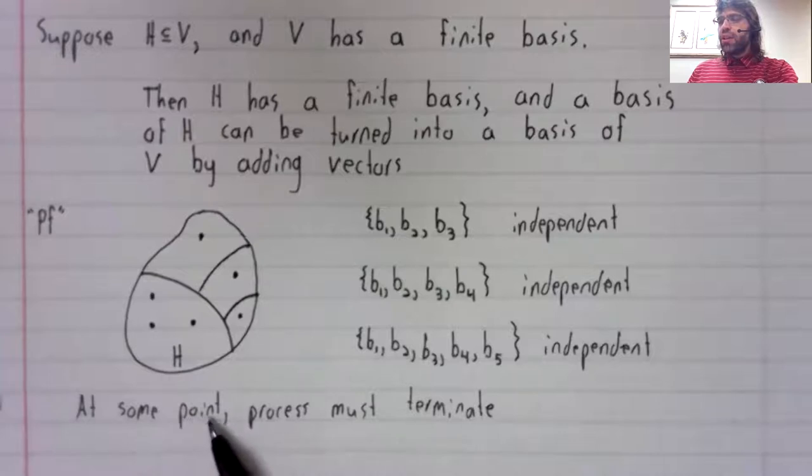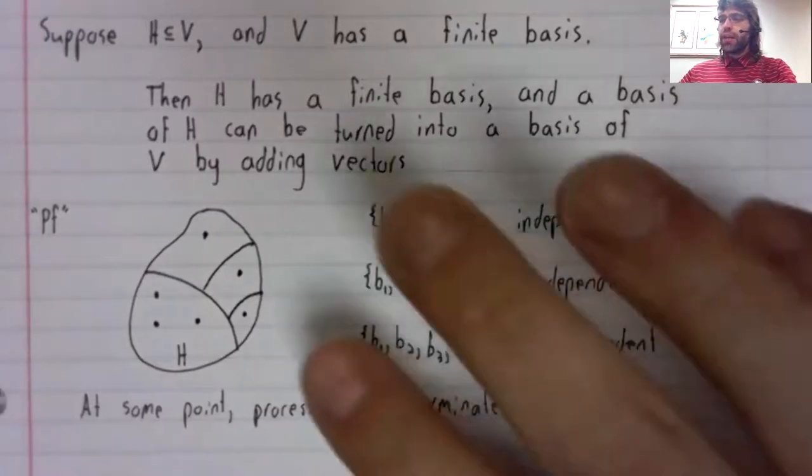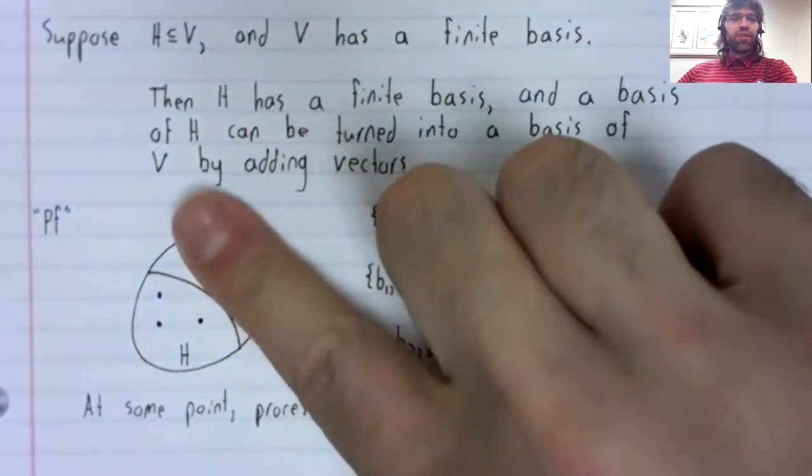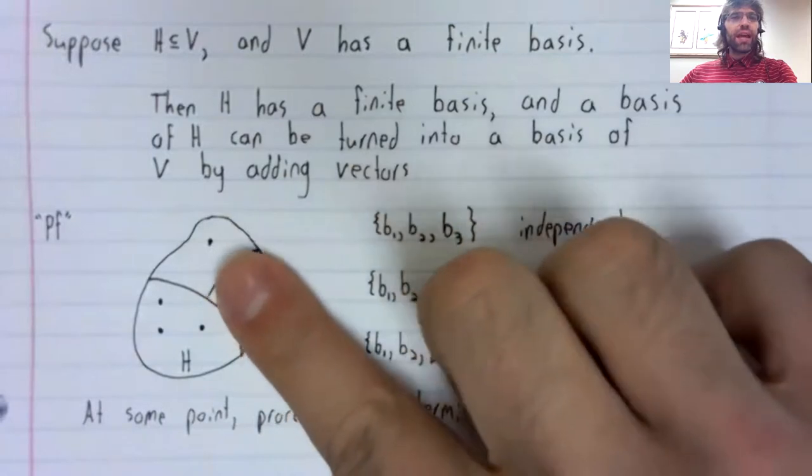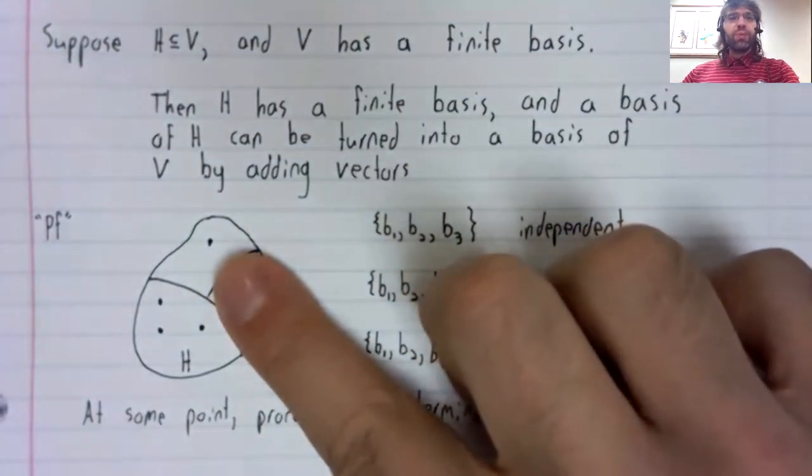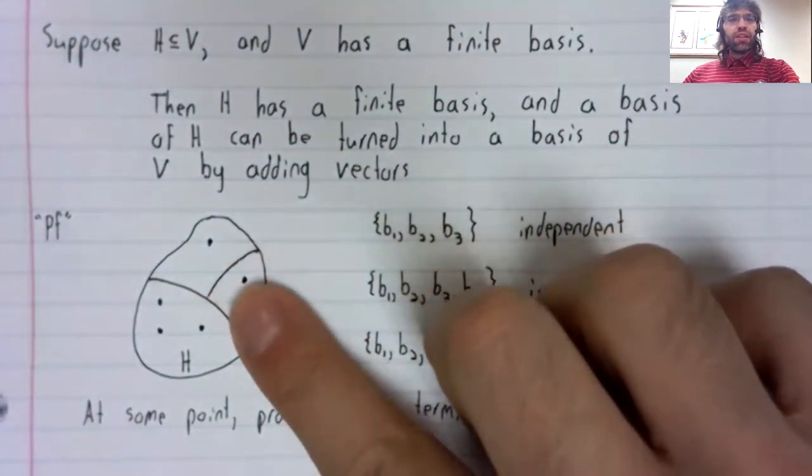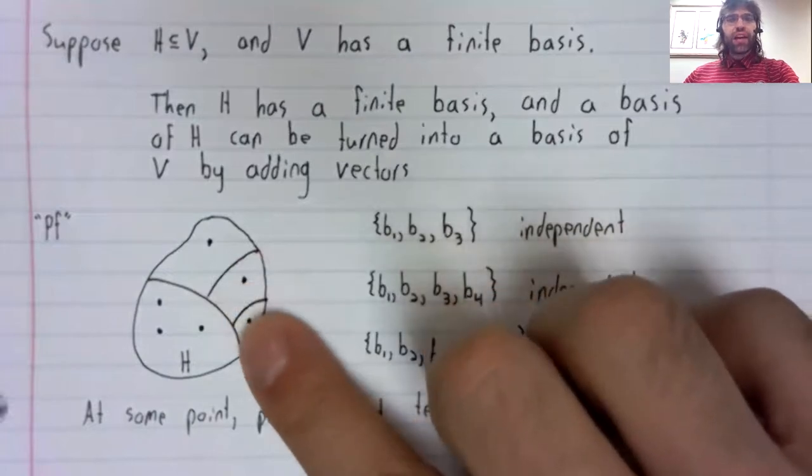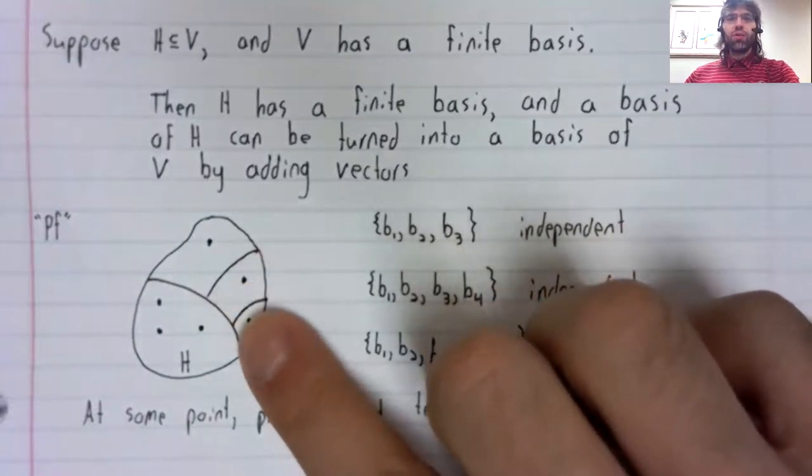What does it mean for this process to terminate? Well, think what we're doing. We don't span V, so we add a vector. We still don't span V, so we add a vector, and so on. As long as these vectors don't span V, we can keep going.